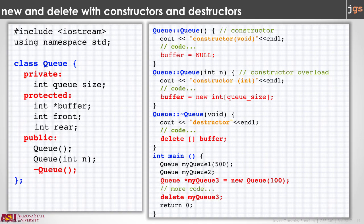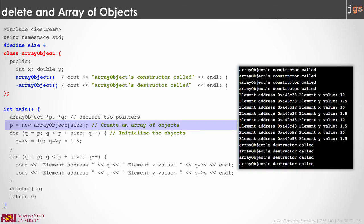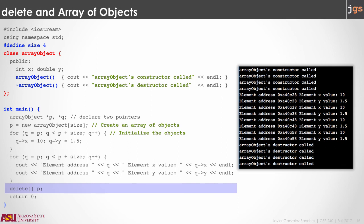One last thing is to review what happens with arrays of objects. When we use new to create an array of objects, new calls the constructor of the class for each object in the array. So if we create an array with four objects, the constructor is called four times automatically. When you call delete on an array — using square brackets after the delete keyword — if the array is an array of objects, the destructor is called once per object. So delete is called four times, one for each object.